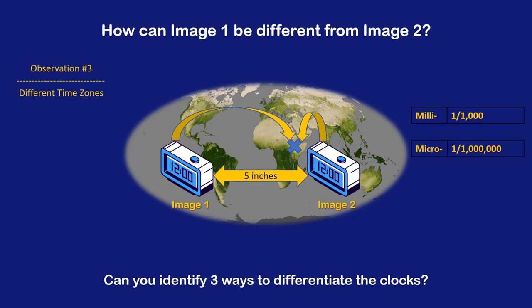Instead, let's divide 1,035 miles — our time zone — by 1,000,000,000. Now we have nano time zones. Our time zone is sliced up into 1,000,000,000 parts; each nano time zone is equal to 0.06558 inches. If the clocks are five inches apart, then they are roughly 76 nano time zones apart, which may seem like a lot, but it is 76 parts out of 1,000,000,000.